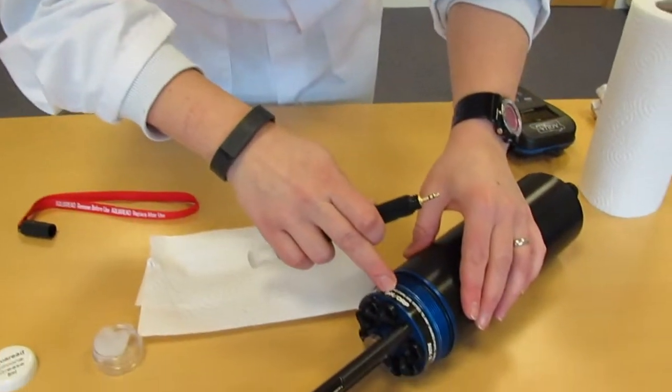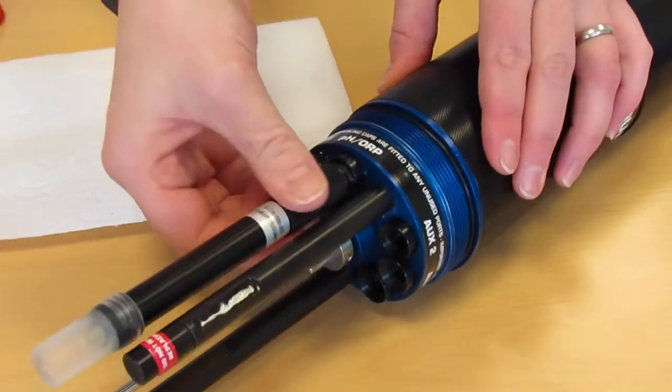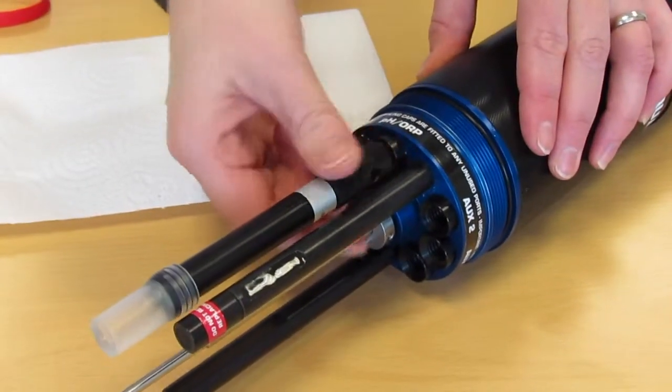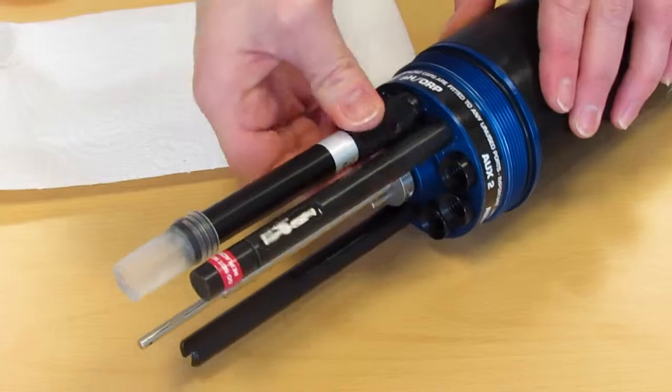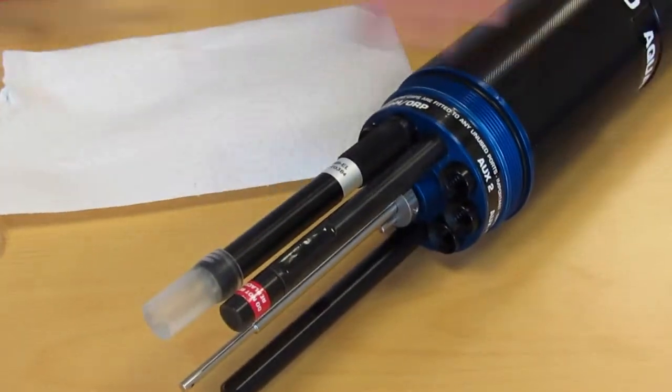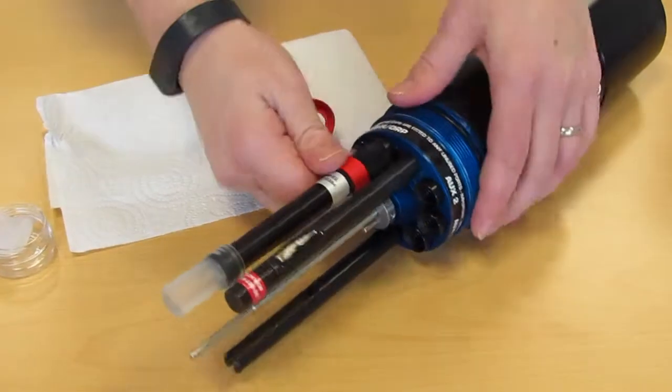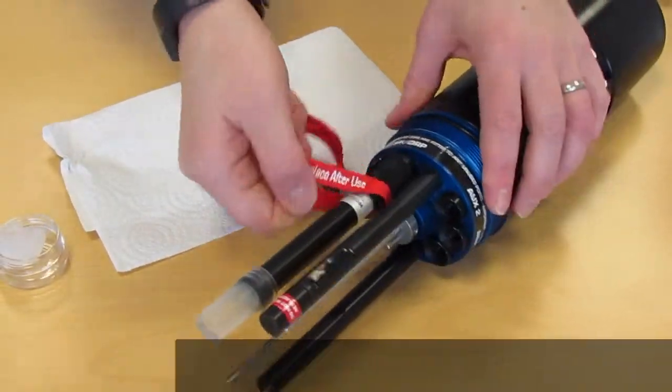This is then inserted into the pHORP socket, like so. This has to be screwed in as tight as possible by hand and then using the red lanyard, tightened up as much as possible.